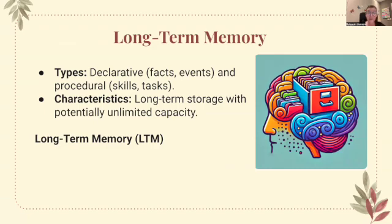Long-term memory comes in different types: declarative, which covers facts and events, and procedural, which covers skills and tasks. Its characteristics include long-term storage with potentially unlimited capacity. Information that is repeatedly rehearsed in working memory gets transferred to long-term memory. Long-term memory has a vast storage capacity and information can be stored for extended periods — from hours to a lifetime. It's where knowledge, experiences, facts, and figures are kept.